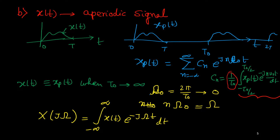But in the inverse Fourier transform, we will take some measure to include this T0 factor, so that we can get X(t) back from this spectrum. That is also very simple: X(t) we can get back from capital X of j omega by multiplying with e to the power j capital omega t, integrating d omega, and with a scale factor of 1 upon 2 pi. The limit should be from minus infinity to plus infinity. So this is about an aperiodic continuous time domain signal.